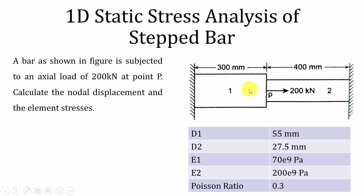Here a 1D bar is given with two different cross sections and two different materials. The diameter of the first cross section is 55 mm and the diameter of the second cross section is 27.5 mm, and the Young's modulus for cross section 1 and cross section 2 is given. Now we are going to perform the static structural analysis using ANSYS Workbench.